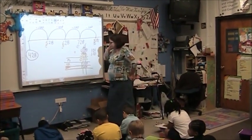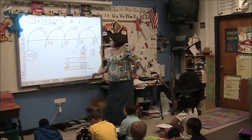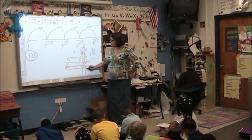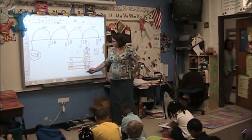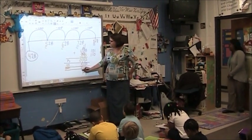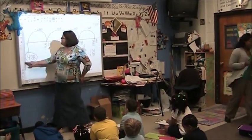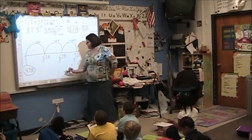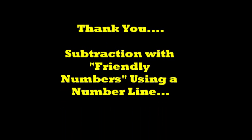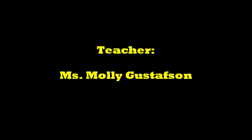Now we add down. Three plus zero plus zero is three. One ten plus one ten is two tens. And one hundred plus seven hundred is eight hundred. Now if we're right, this 823 is going to match the first number on the board. Were we right? Yes! Good job.